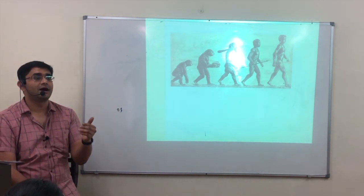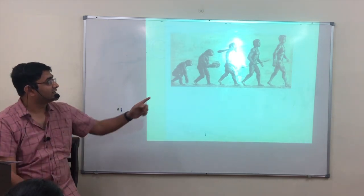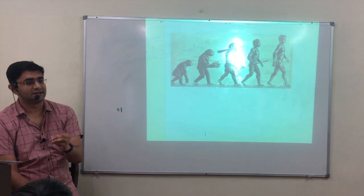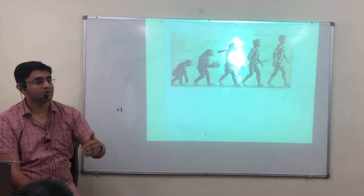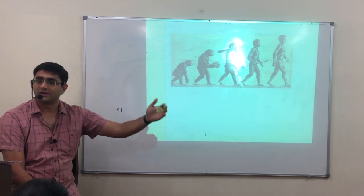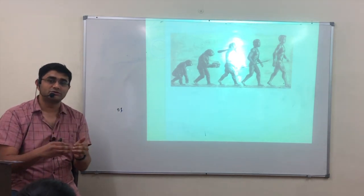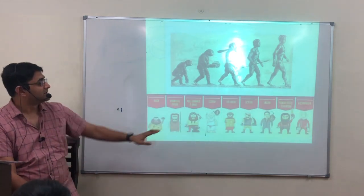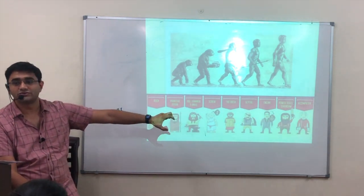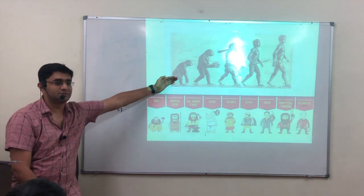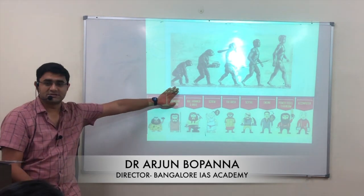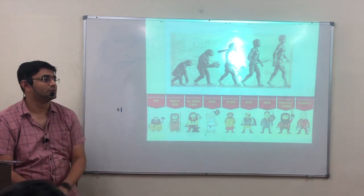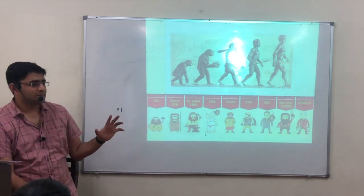Then there were some who were interested in how culture evolved. They started studying culture from an evolutionary point of view. So sometimes it is said that anthropology is a child of Darwin, because Darwin started talking about the physical evolution of humans. Some anthropologists used the same principle to study cultural evolution of humans, applying Darwinian principles to understand human culture's development.